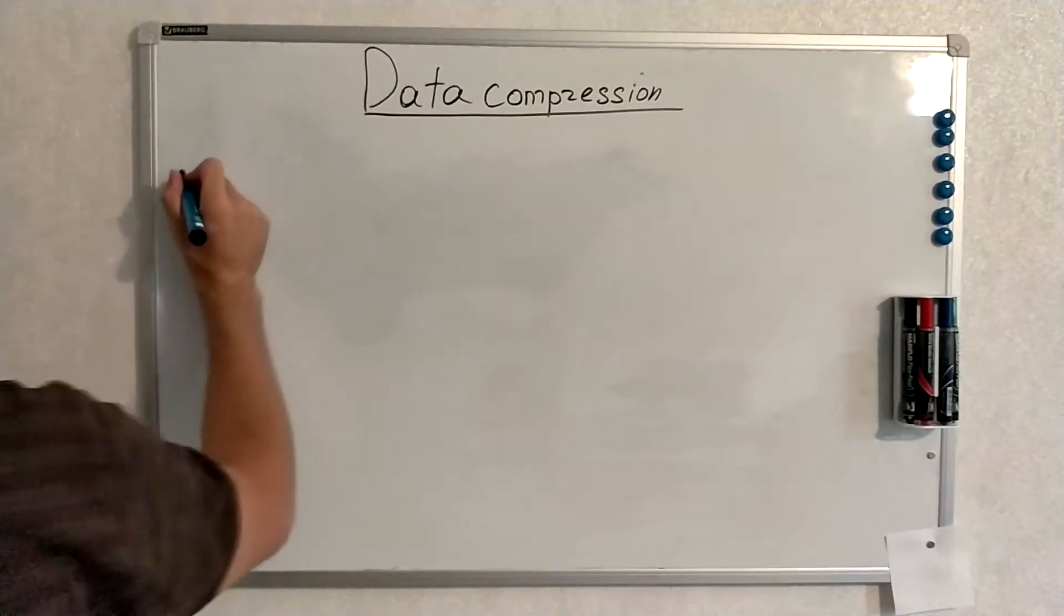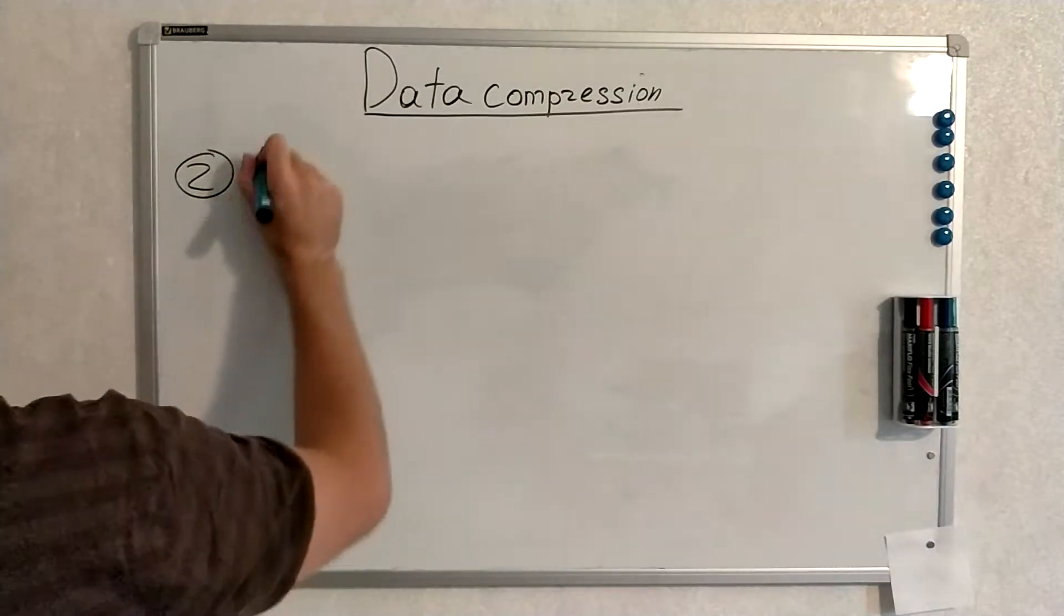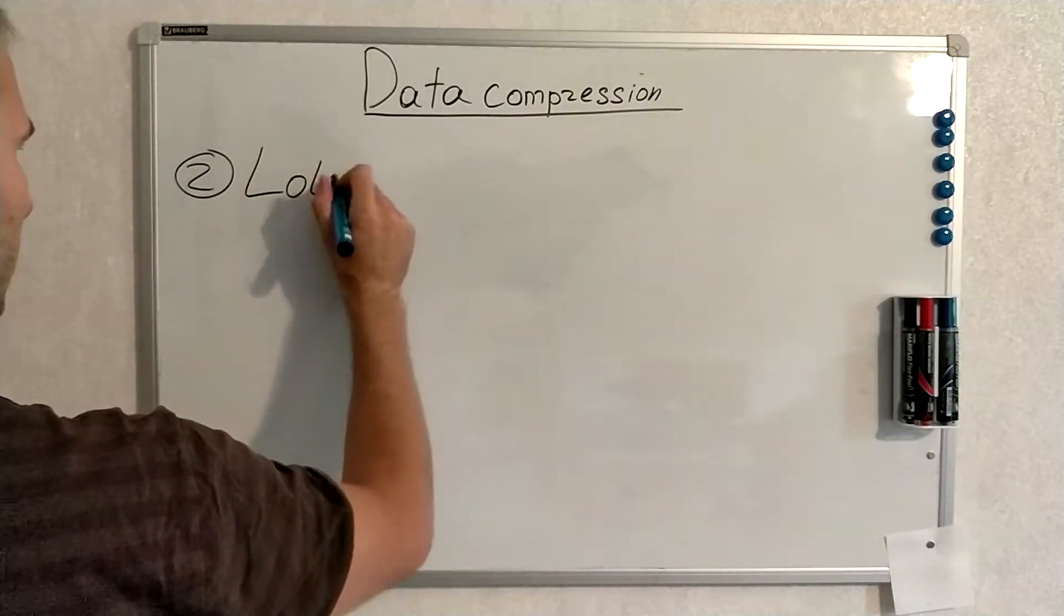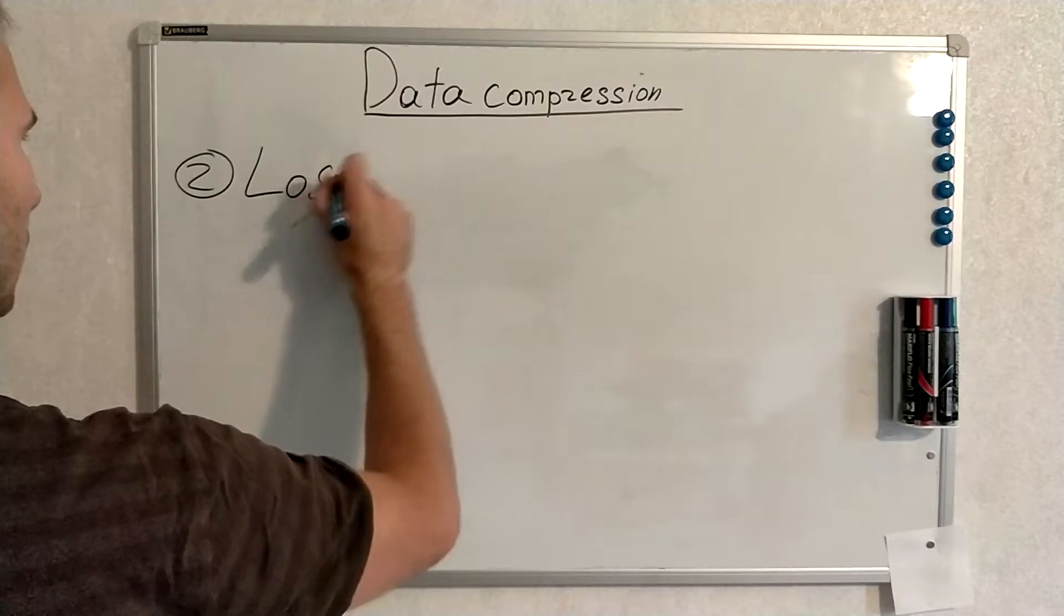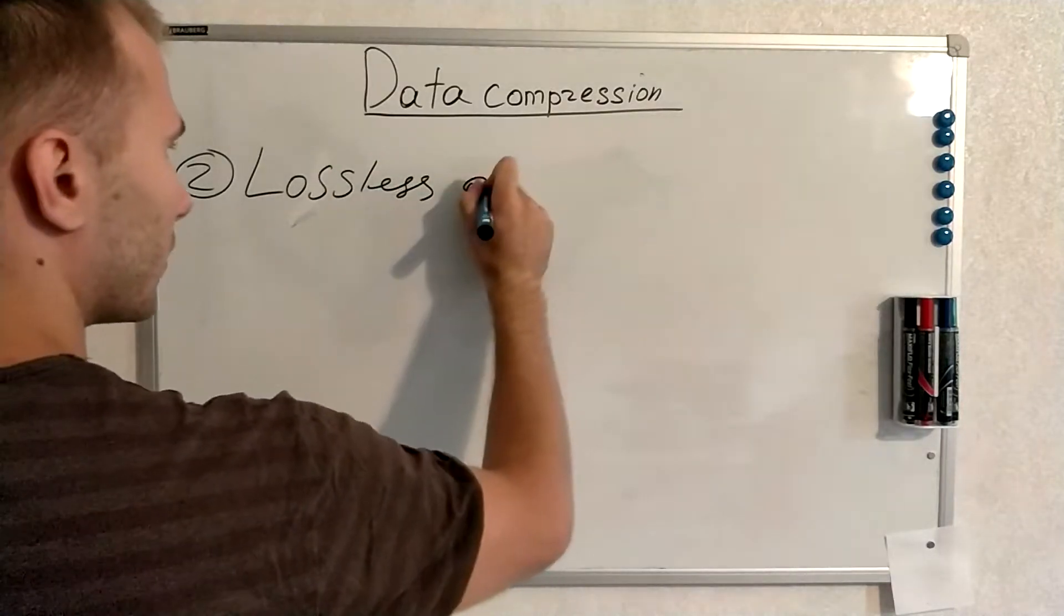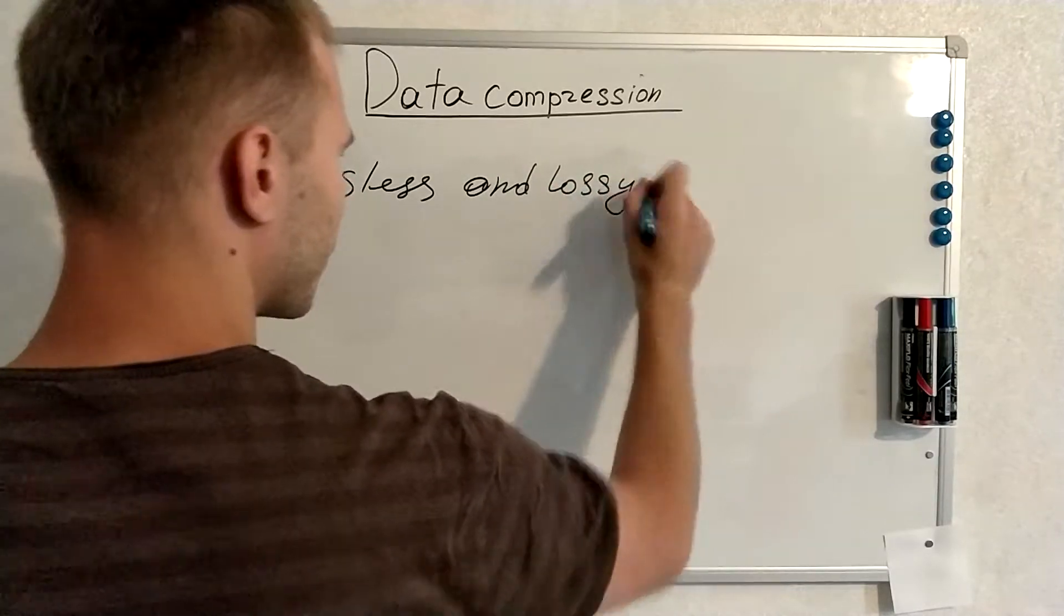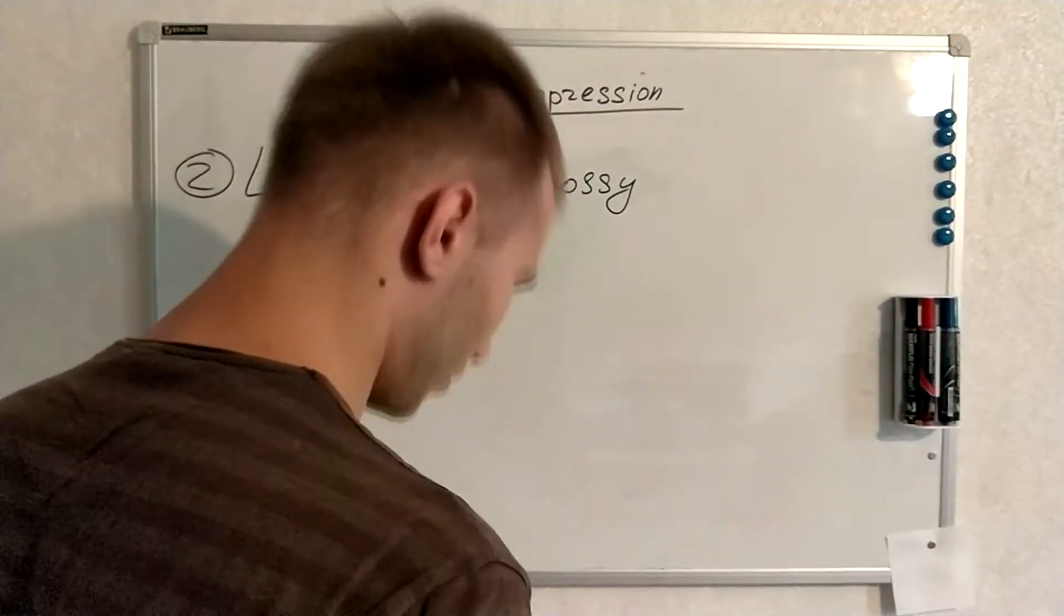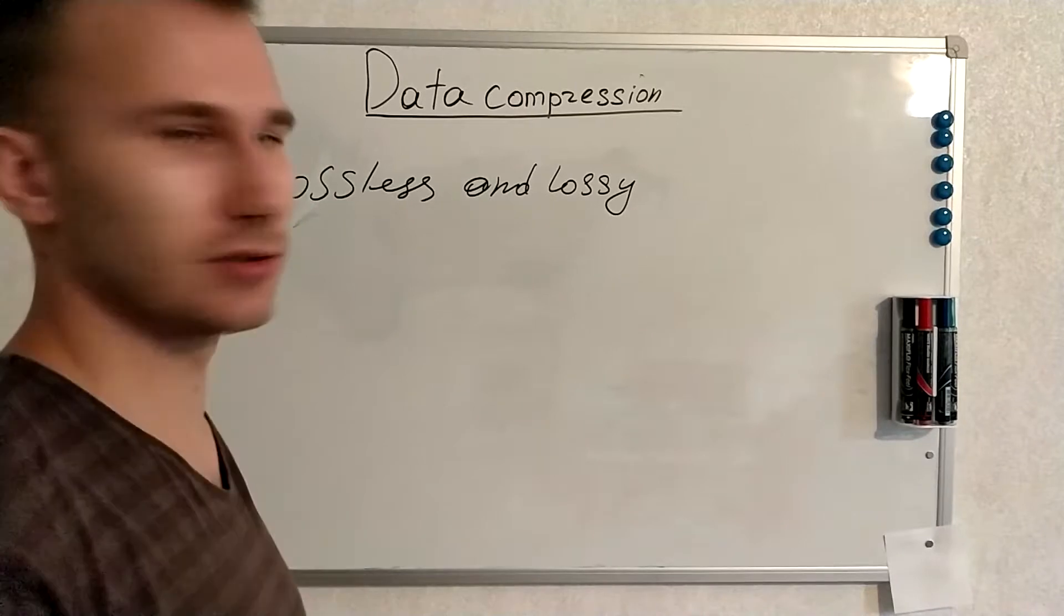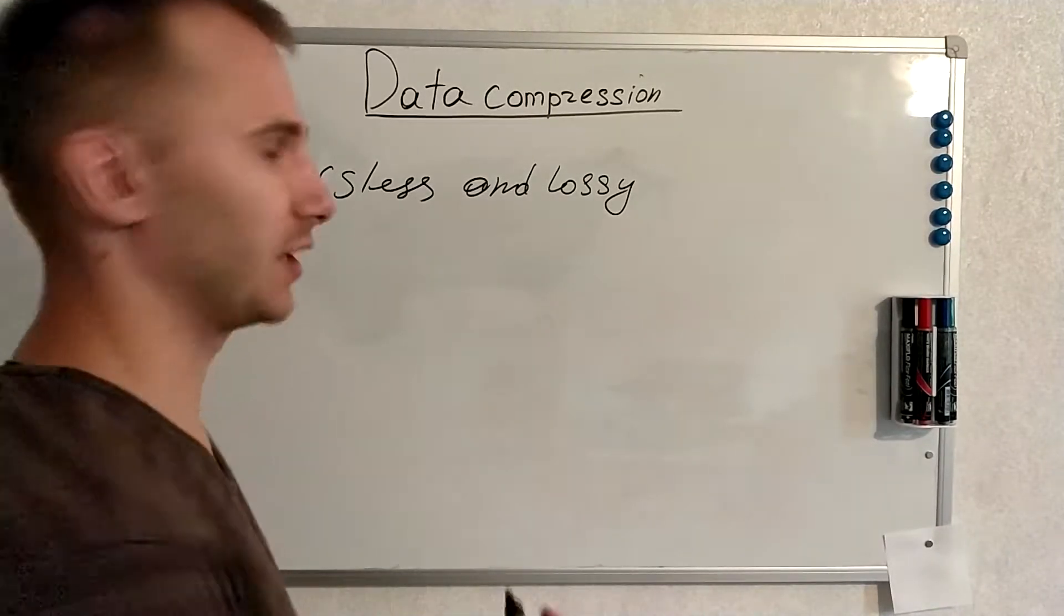There are two main branches of data compression. This will be lossless and lossy. Lossless means that we do not lose any information during the compression. We use the redundancy of data.